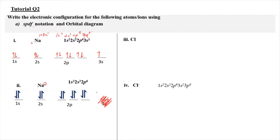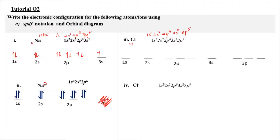The same approach applies to chlorine. Chlorine will have 17 electrons, and you can write the SPDF notation as 1s2, 2s2, 2p6, 3s2, and 3p5. You can also draw the orbital diagram: 1s2, 2s2, 2p6, 3s2, 3p5, filling it one by one.